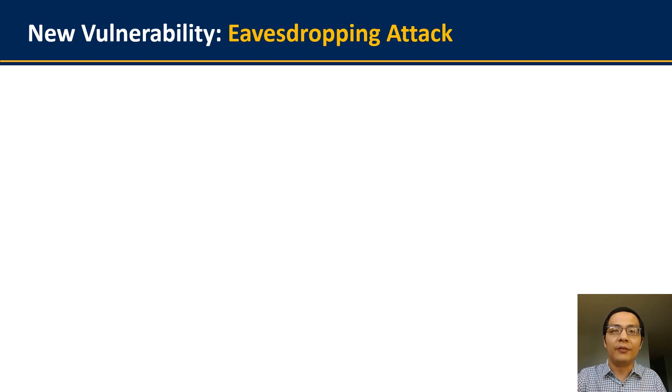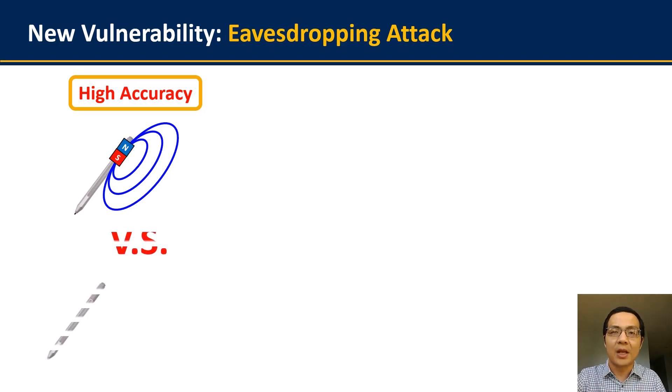This new type of eavesdropping attack has many unique characteristics. First, this eavesdropping is highly accurate. The magnetic field is known to be consistent against most types of external disturbances. So compared with other existing approaches that infer handwriting from either the audible writing sound or the disturbance of wireless signals, such magnetic sensing is much more reliable and resistant against different types of external disturbances, such as the impact of ambient noise and wireless interference.